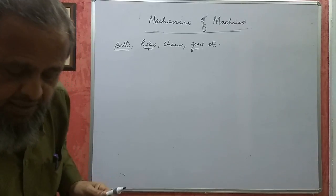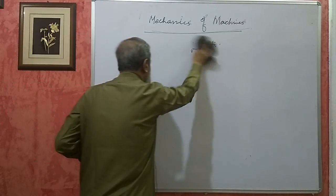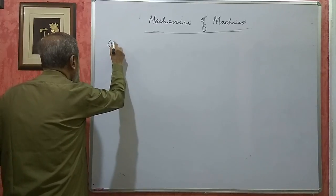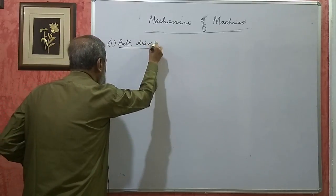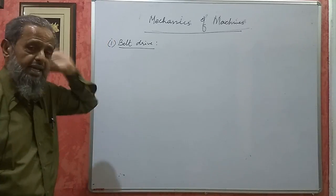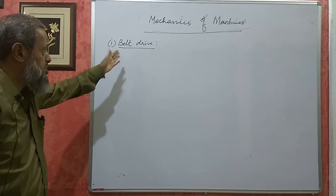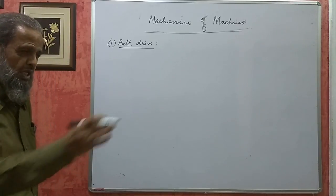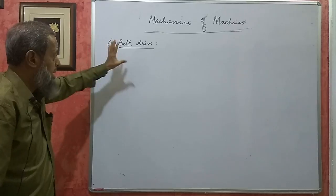In this chapter you will get numericals. I will start with belt drive. If a belt is used for transmission of power, then it is called a belt drive — we are transmitting power from one shaft to another by using a belt. You use belt drive in a floor mill, in two-wheelers, and in many other places.